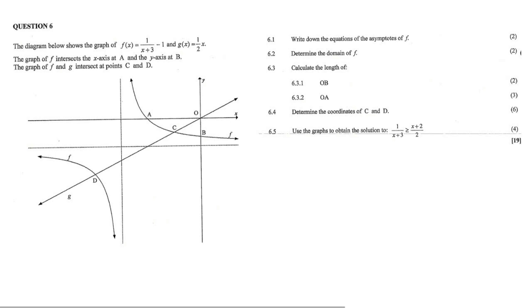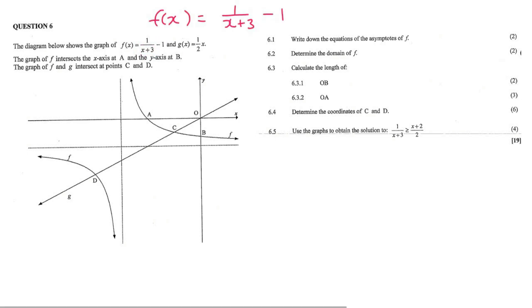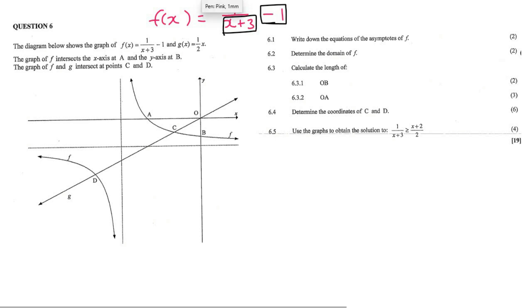In question 6.1 we are asked to write down the equations of the asymptotes. Remember that the asymptotes of a hyperbola are always found on either side. This part tells us that the graph has moved three places to the left, and this part tells us that the graph has moved one unit down. Therefore the asymptotes would be these two lines.